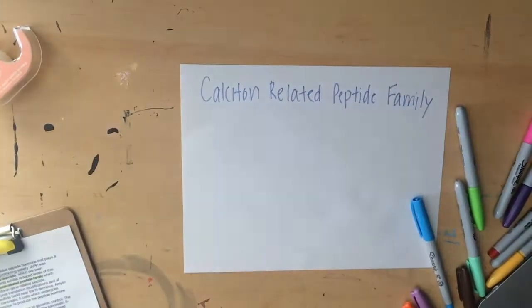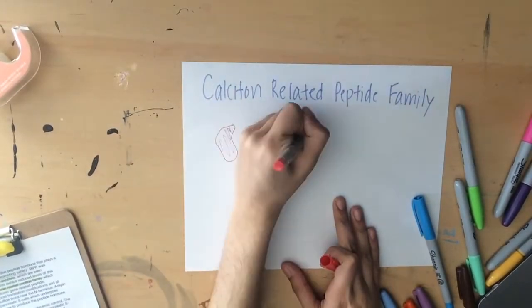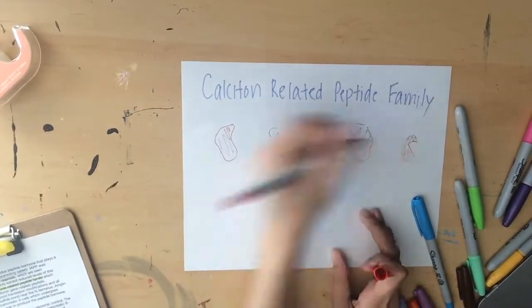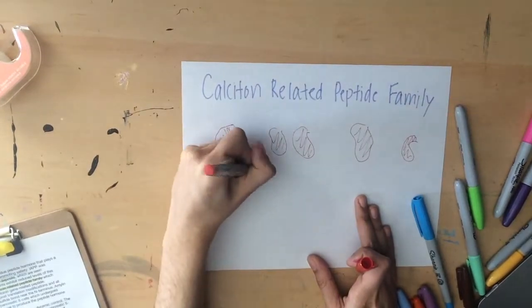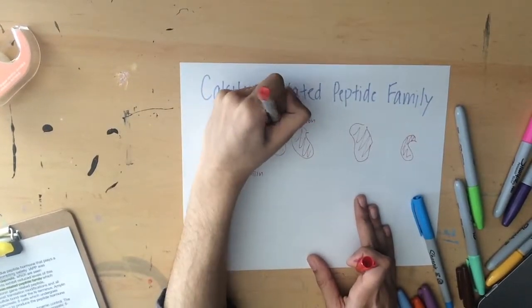which includes peptides such as adrenomedullin, alpha- and beta-calcitonin gene-related peptide, intermedin, and calcitonin.